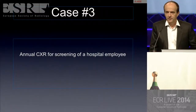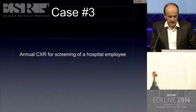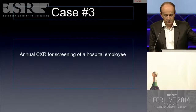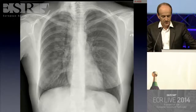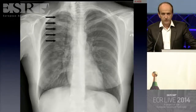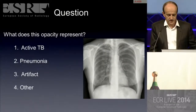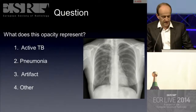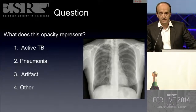Beware technical conditions. Case 3: a hospital employee undergoing a chest radiograph for screening. Most of you have seen this abnormality. What does this opacity represent? Active TB, pneumonia, artifact, or other? Please vote now.